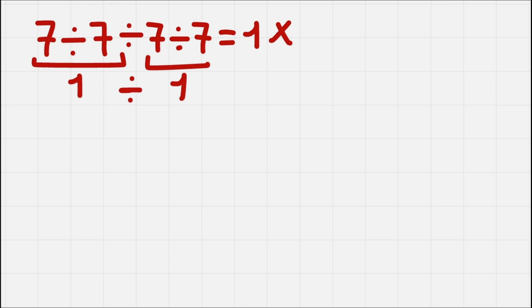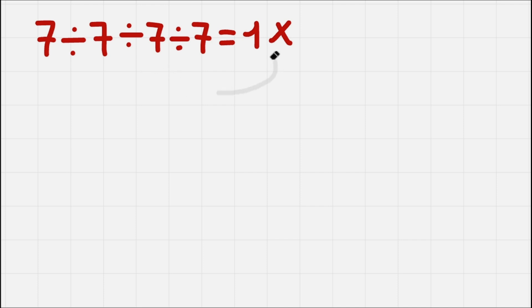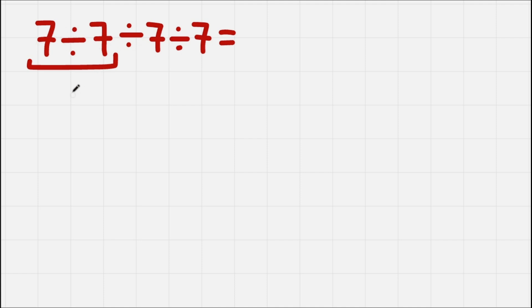So now let's correct every mistake that we made. We have 7 divided by 7 — working from left to right, we need to start with this one. 7 divided by 7 is pretty easy, we get 1.